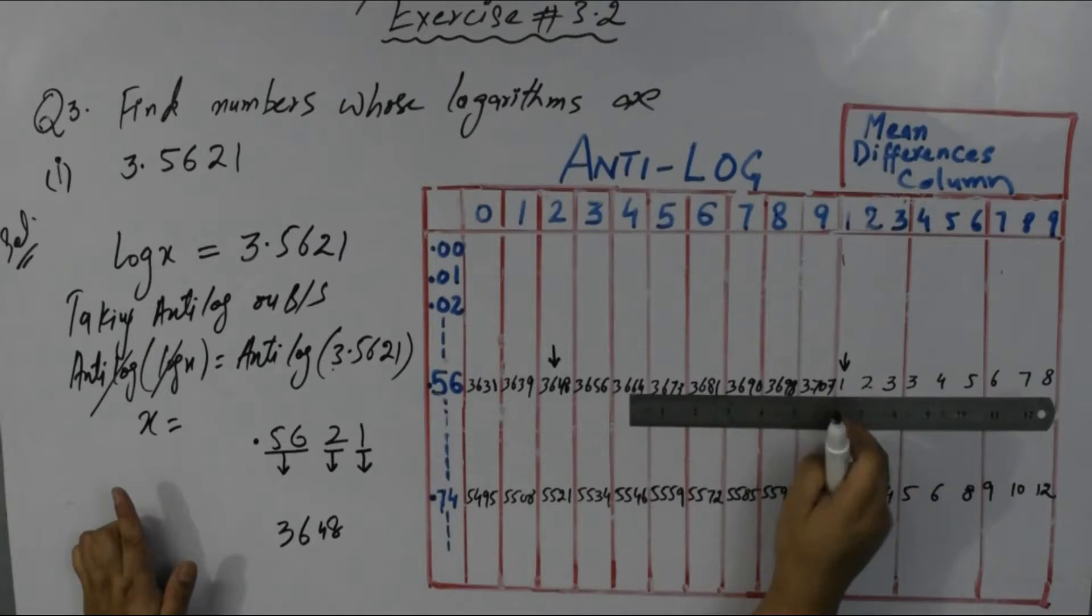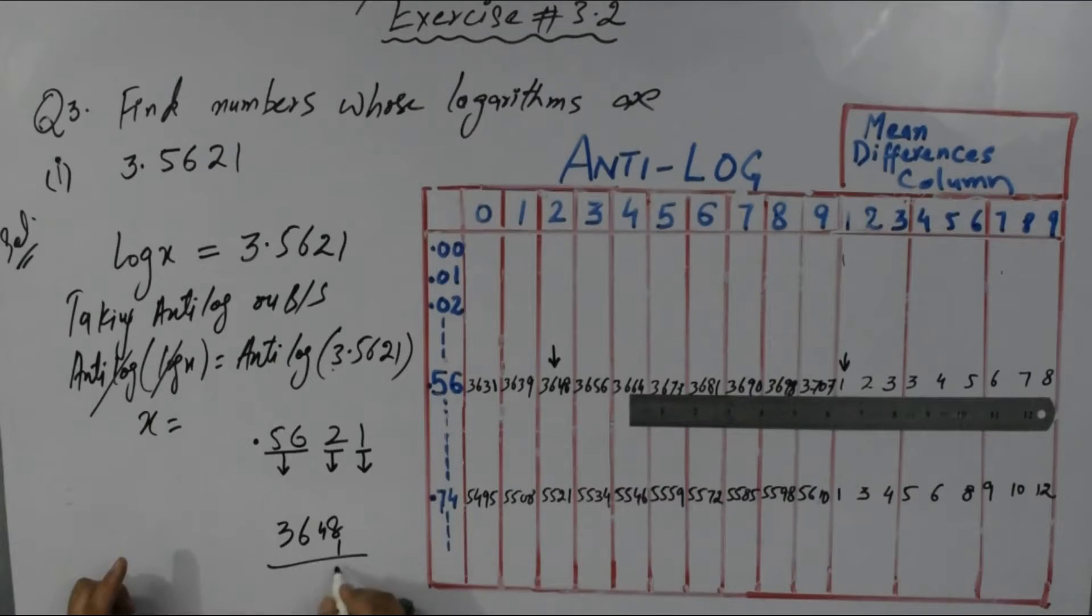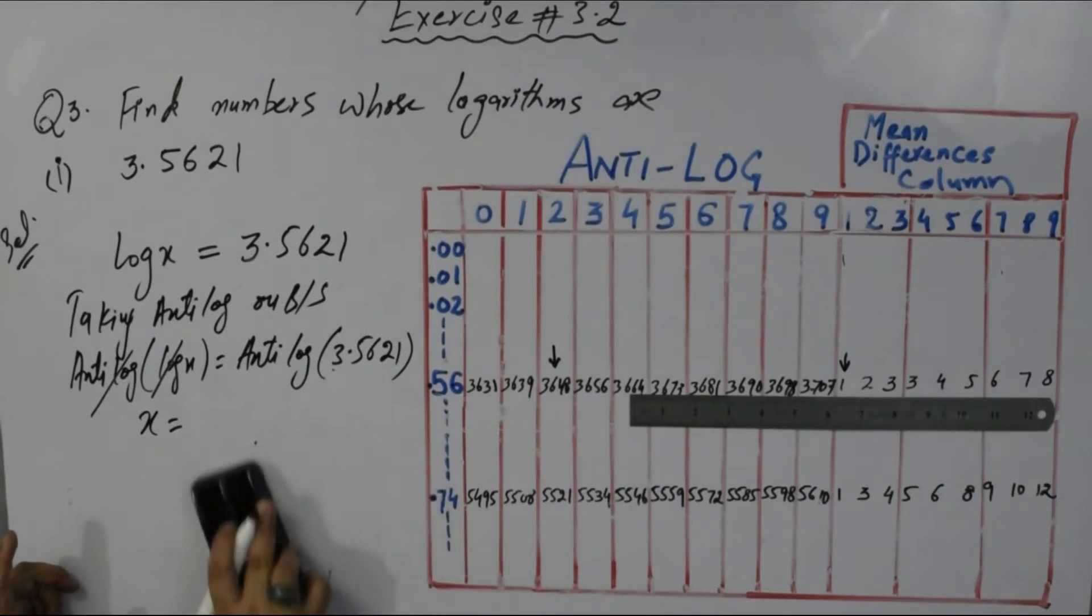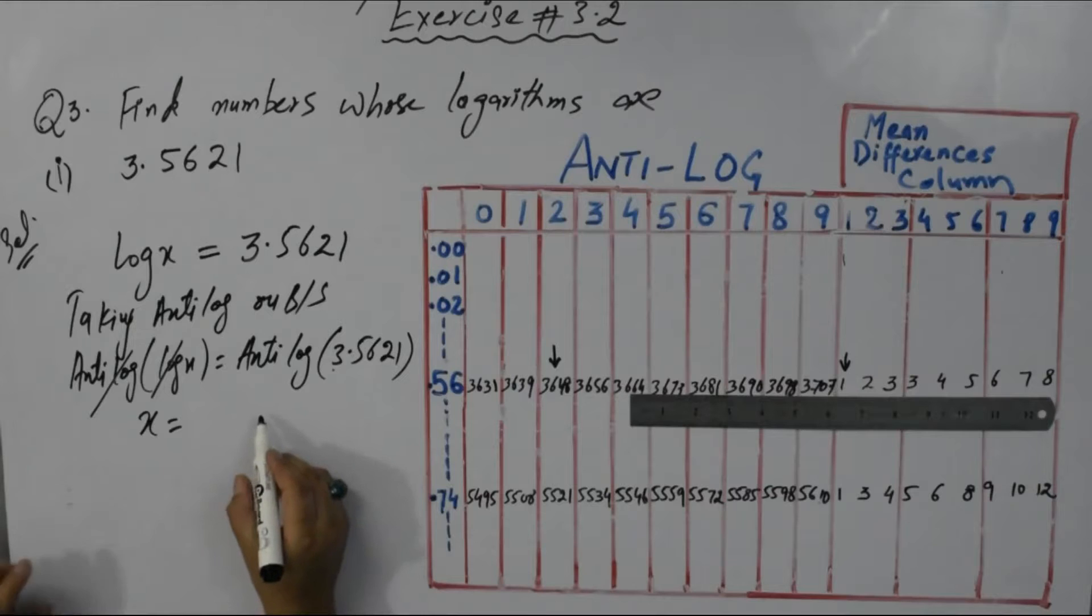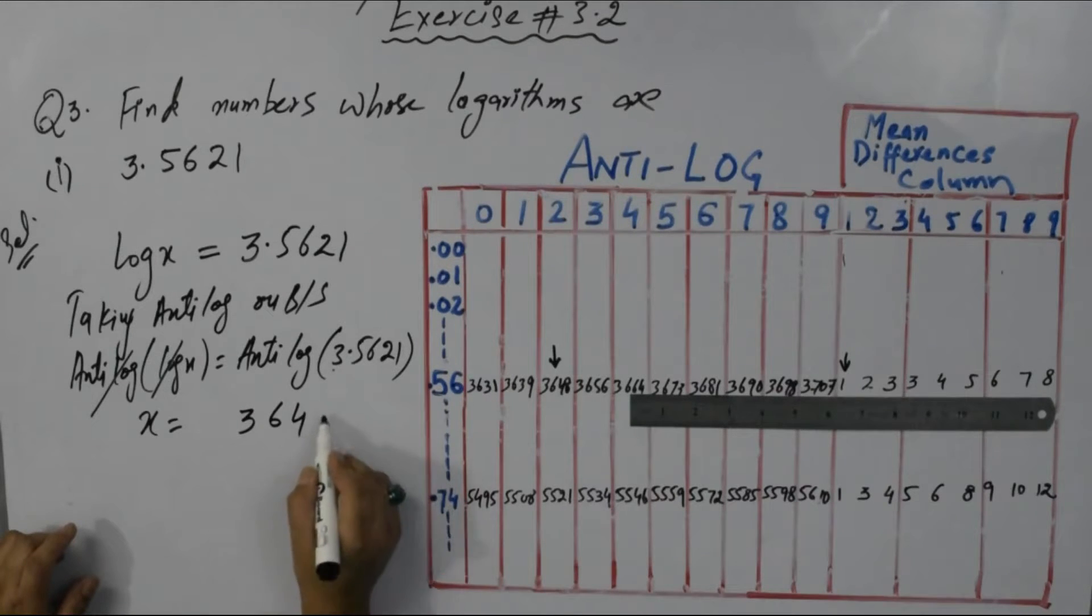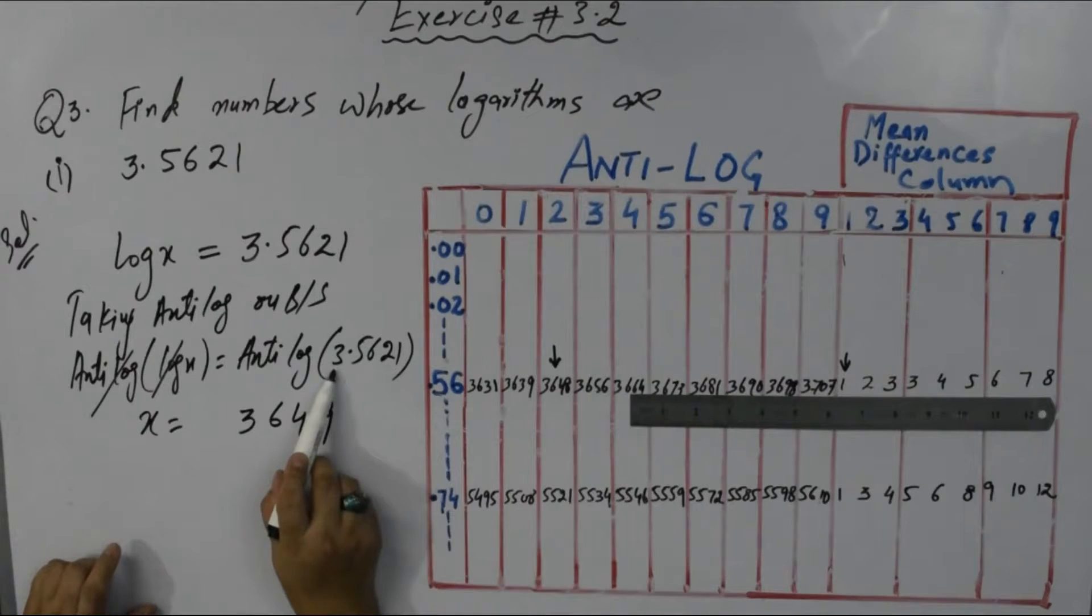In mean differences column under 2, corresponding to 0.56, I add 1 to get 3649. This is my first answer, this is the number.